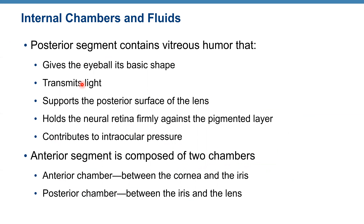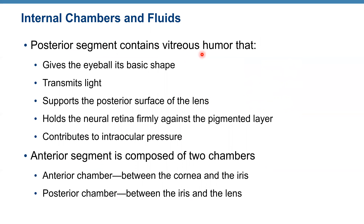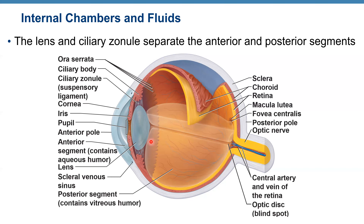When the ciliary body contracts, it can change the shape of the lens — making it more concave or flat. The ciliary zonules pull on the lens. The posterior segment contains vitreous humor, which gives the eyeball its basic shape. This gelatinous fluid transmits light, supports the posterior surface of the lens, holds the neural retina firmly against the pigmented layer, and contributes to intraocular pressure.